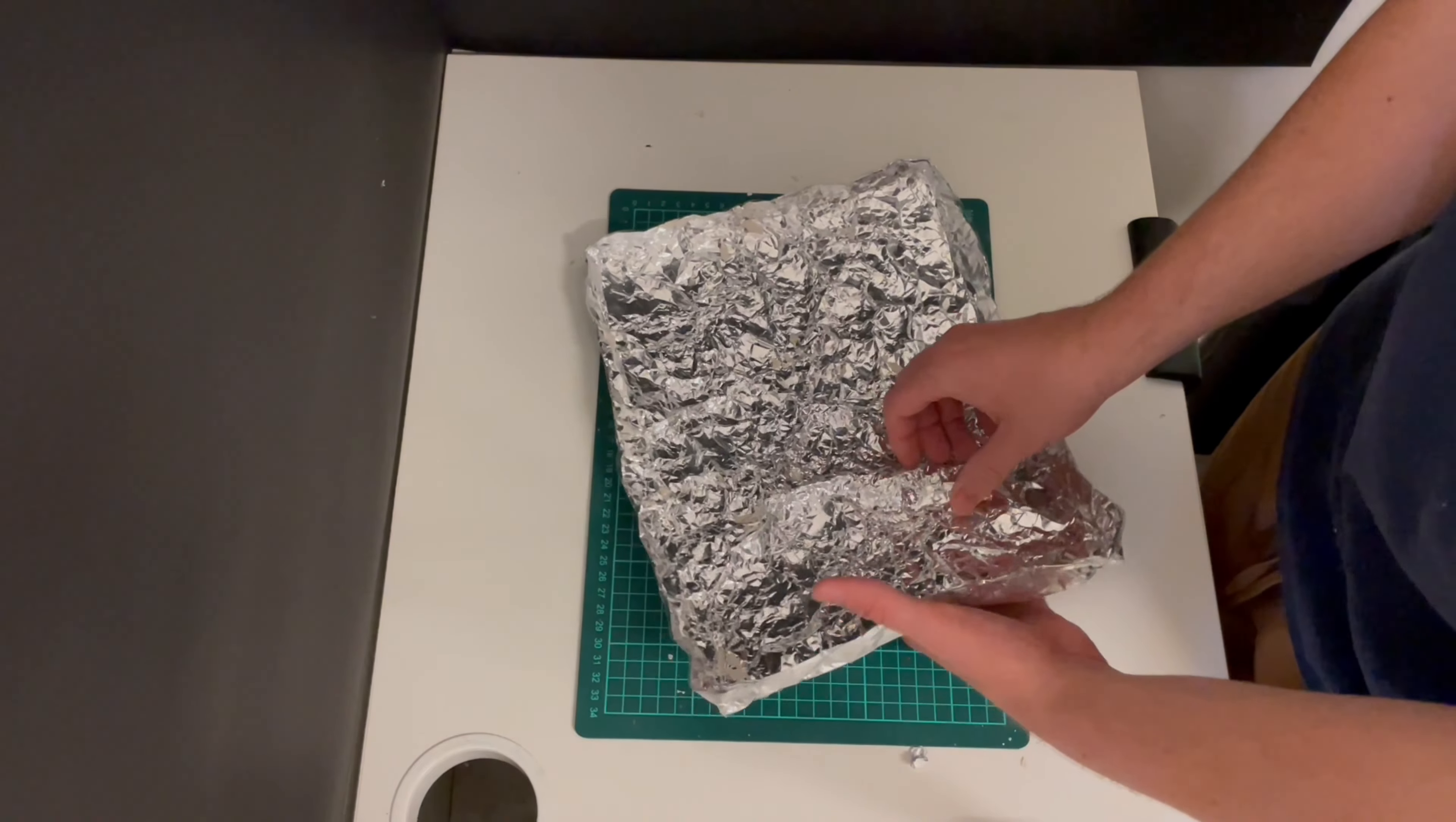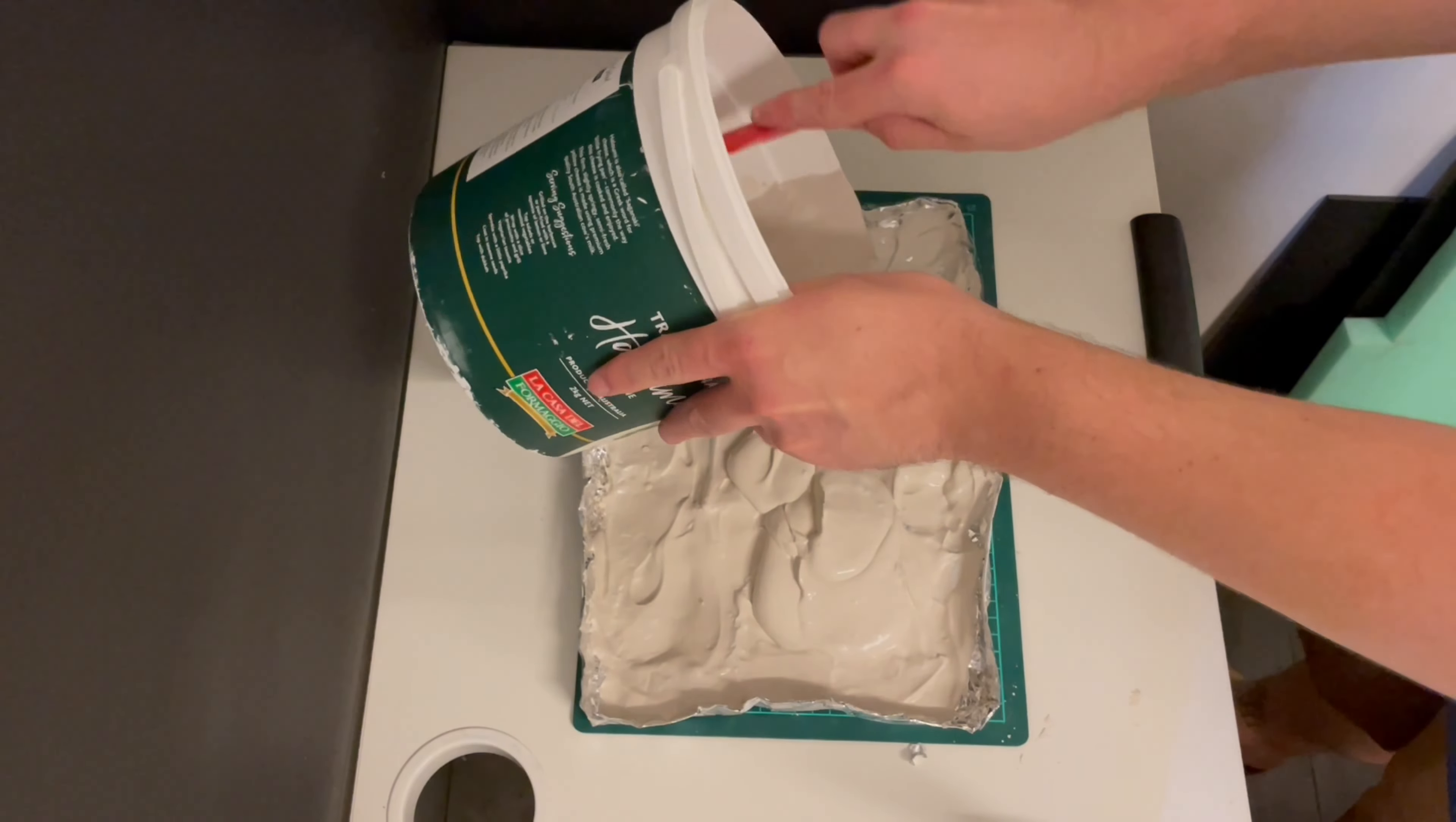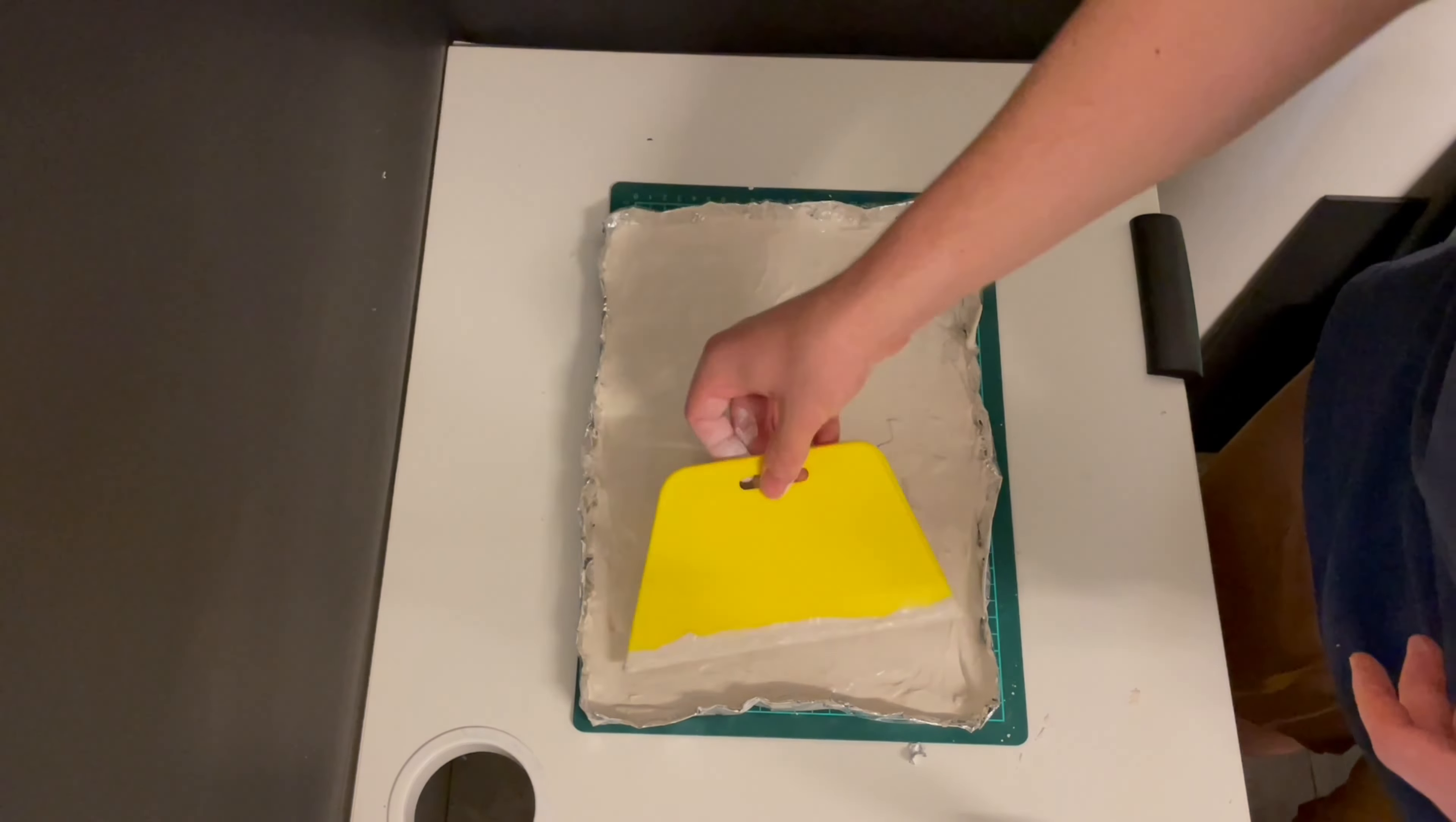For the next batch, I want to make some deeper ridges, so it's as easy as pinching the foil into nice deep ridges like this. And I want this one to be the main piece, so I'm pouring the plaster of Paris on a bit thicker to make it nice and sturdy. To make it easier to attach to the base, I'm just trying to smooth it out as flat as I can.